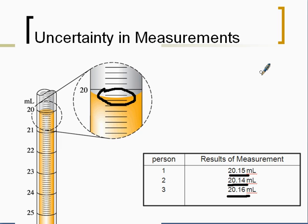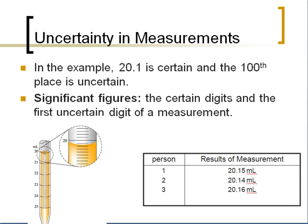Who's right and who's wrong in their measurements? Actually, they're all correct. We can all agree that 20.1 is correct, but it is that uncertainty in between those two lines — we don't know if it's .05, .04, or .06. This brings us to the definition of significant figures. In the example, 20.1 is certain and the other place is uncertain. Significant figures are the certain digits and the first uncertain digit of a measurement. So all three people writing this in their lab book would all be correct — 20.1 are certain, but that last digit is uncertain, and all of it together is considered a significant figure.